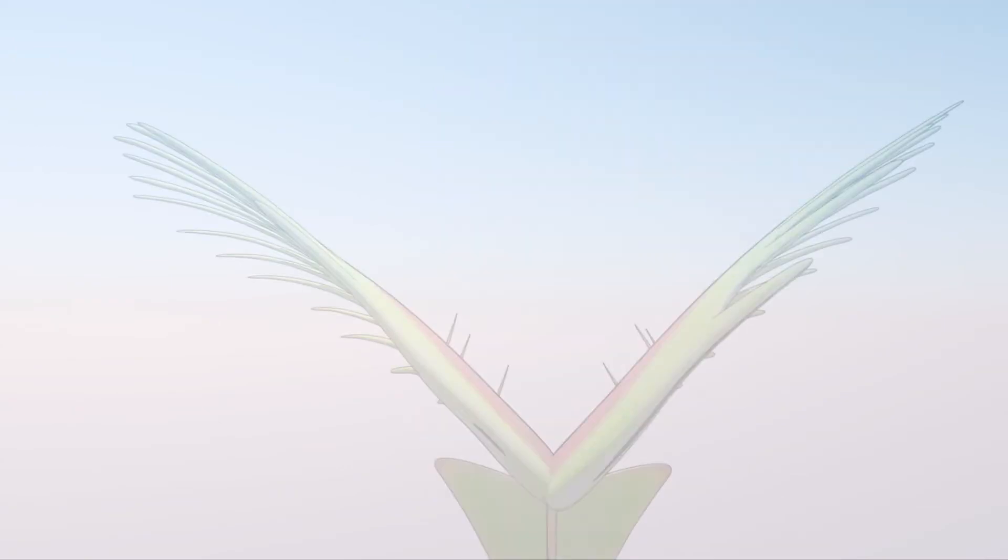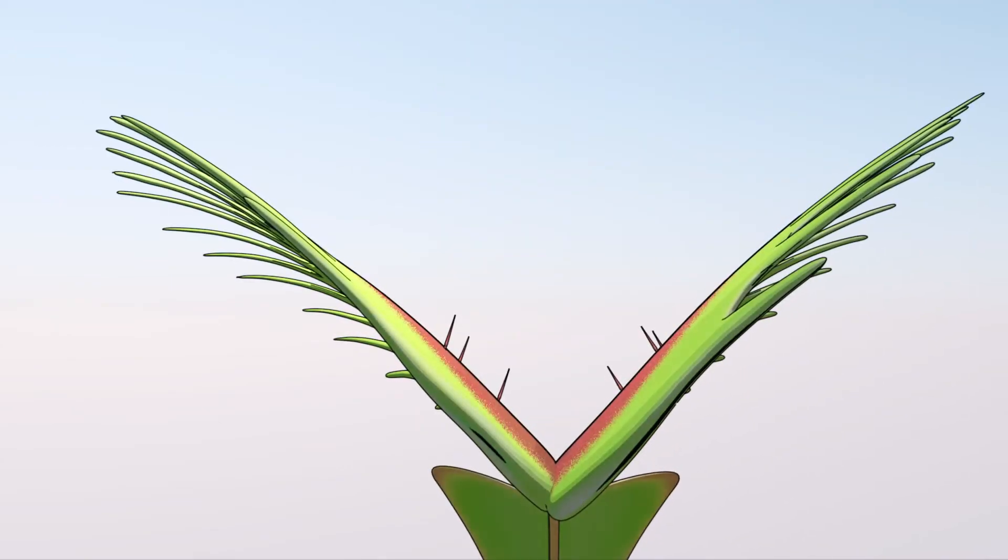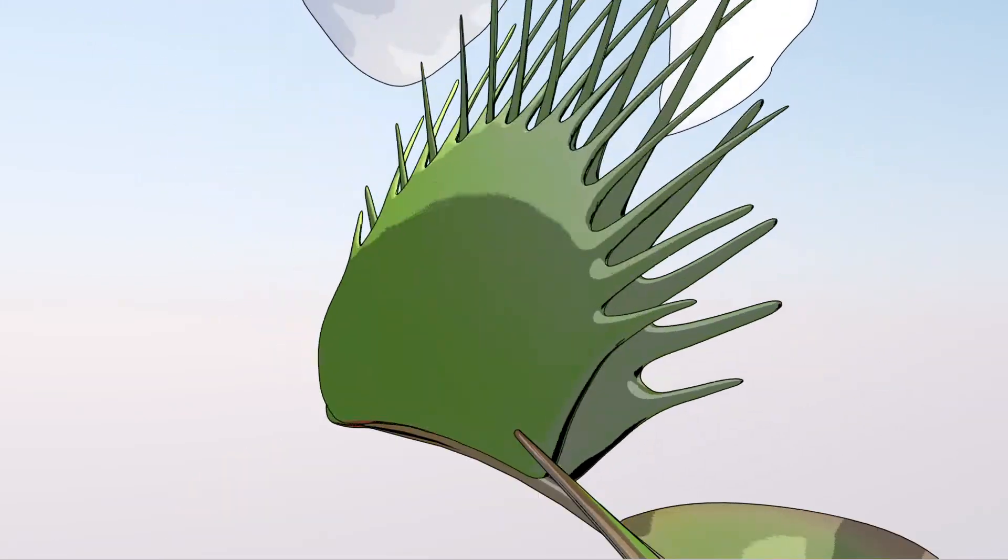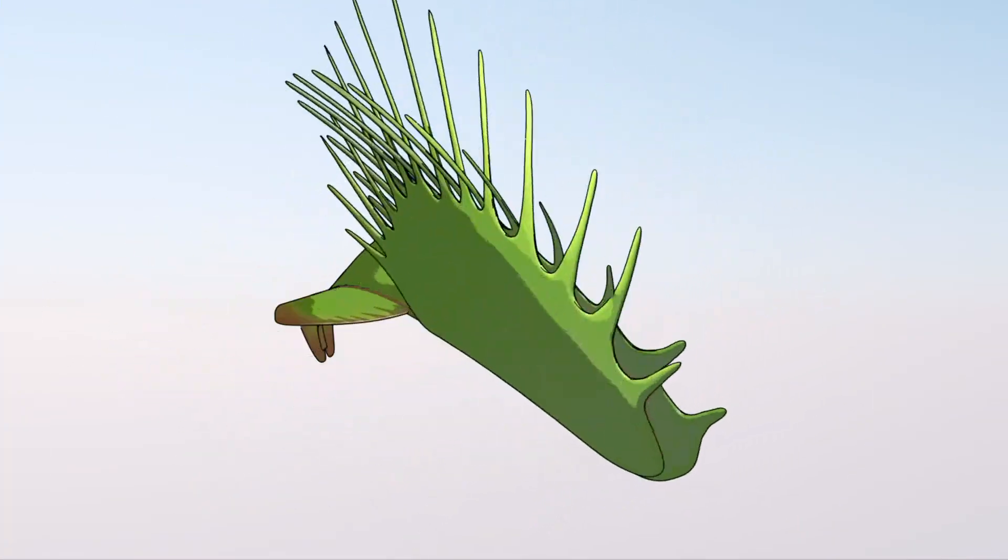This rapid shift of water quickly changes the shape of the lobes from convex to concave, enabling the plant to close and trap within half a second.